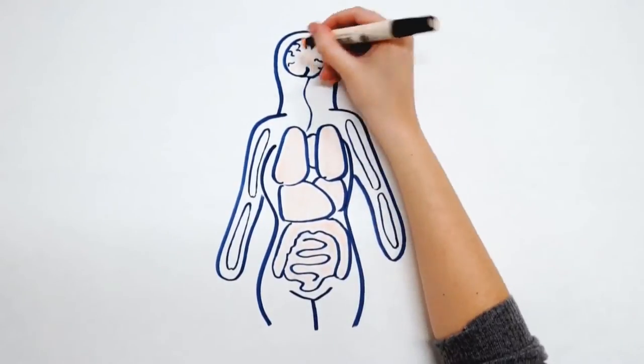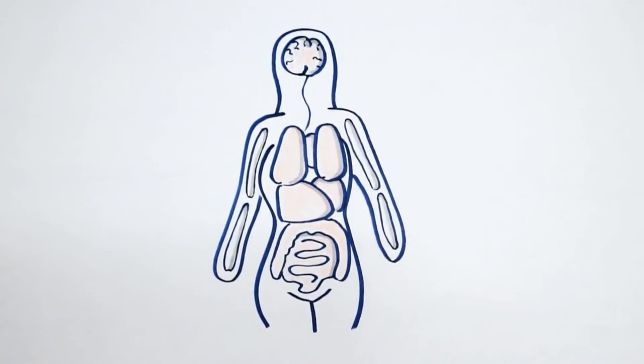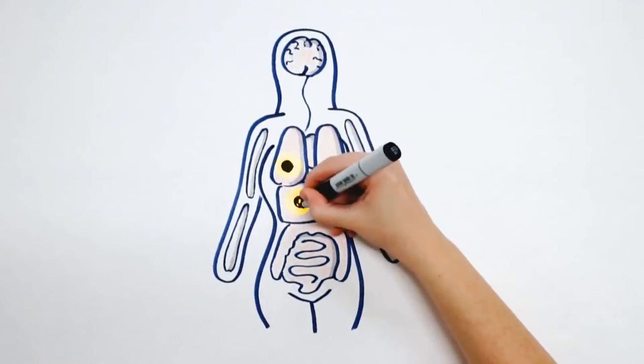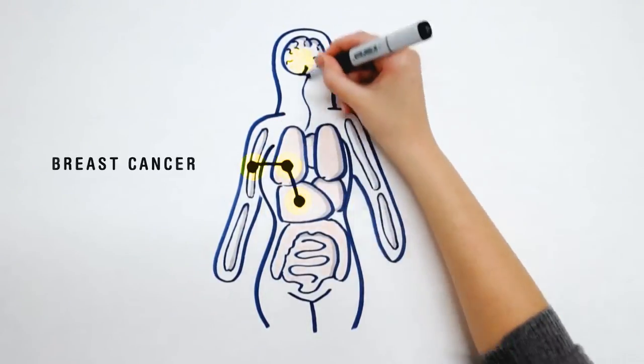In rare cases it can, but more commonly the cancer starts at one site such as the breast and the cancer cells spread to those other organs. So it's breast cancer in all those places.